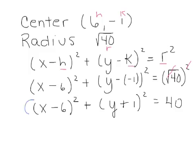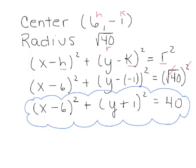So we have found the equation of the circle whose endpoints of the diameter are (8, -7) and (4, 5).